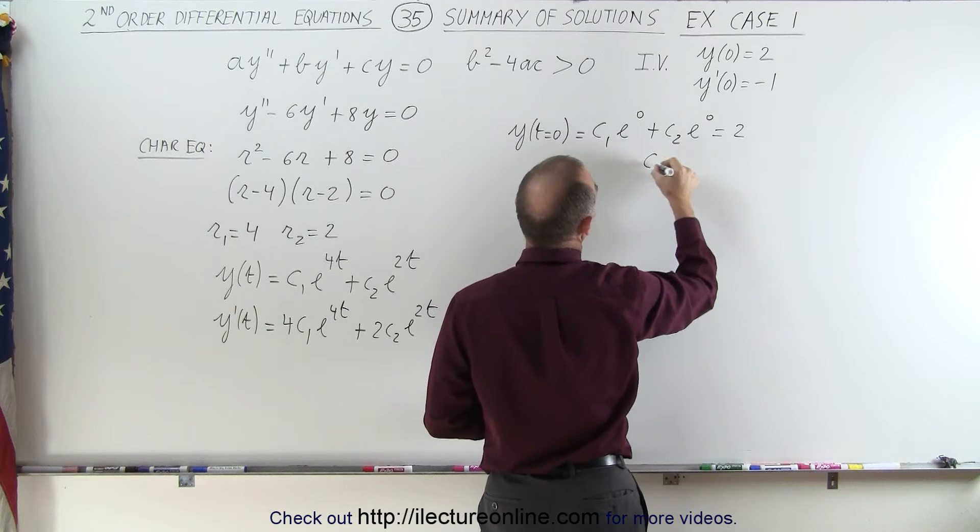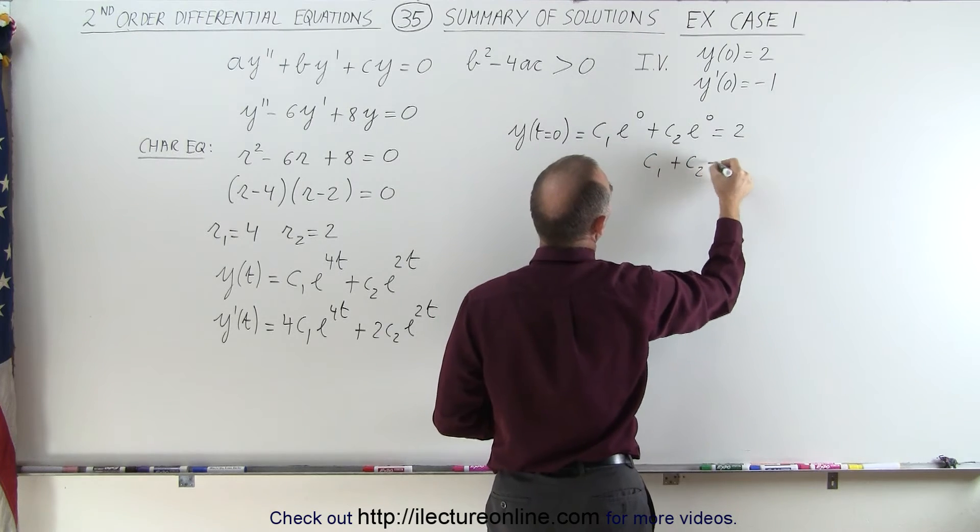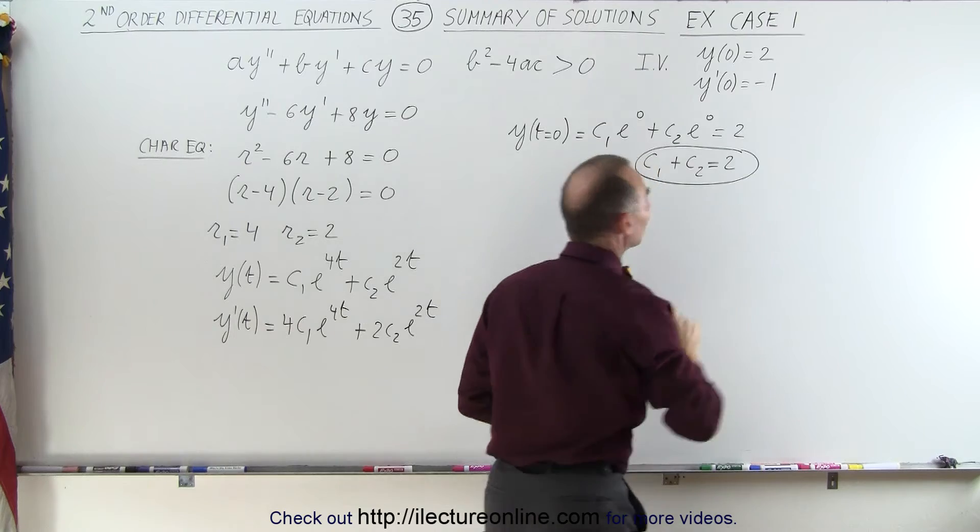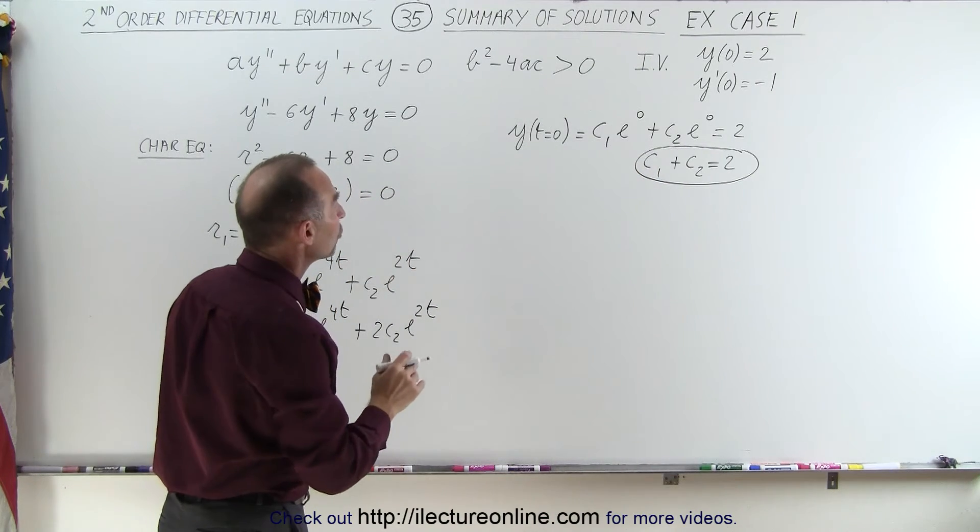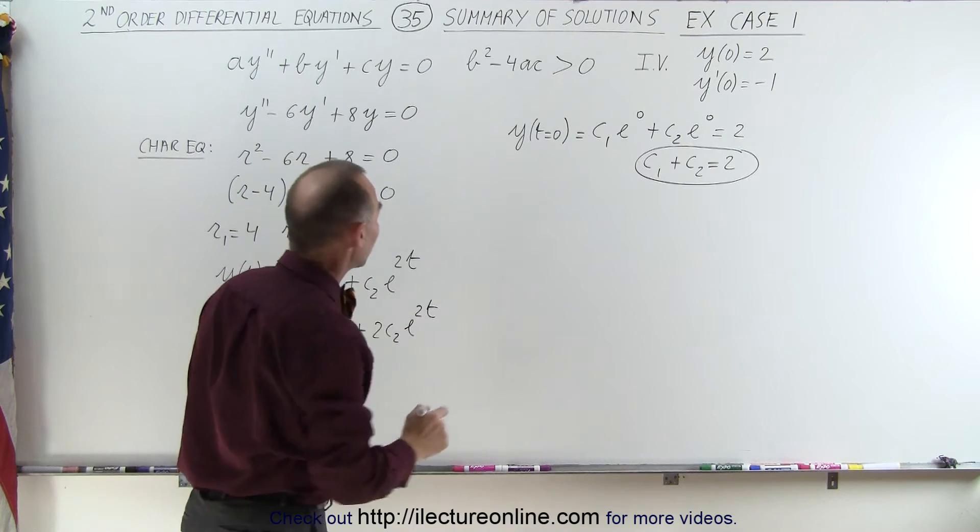In other words, c1 plus c2 equals 2. So now we have one of the two equations necessary to find the two constants.